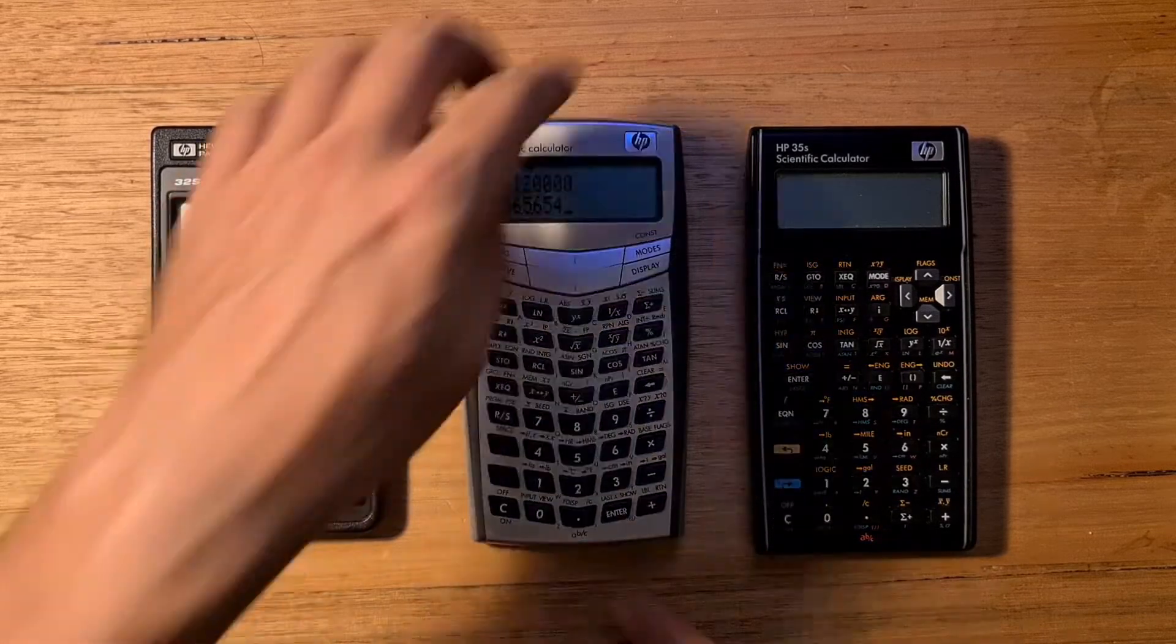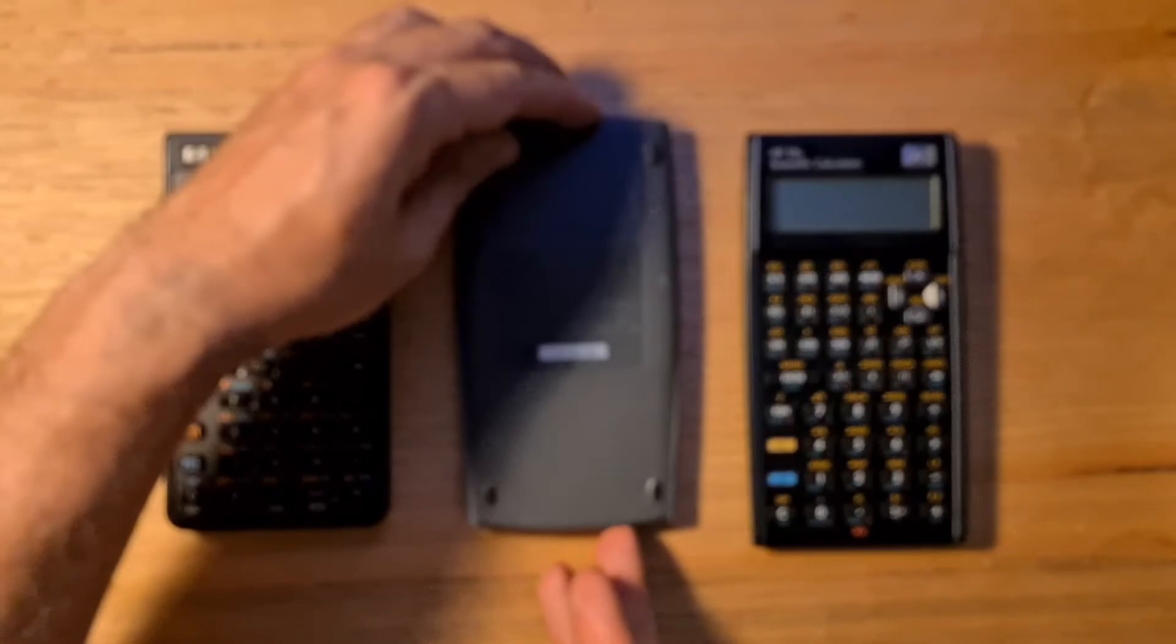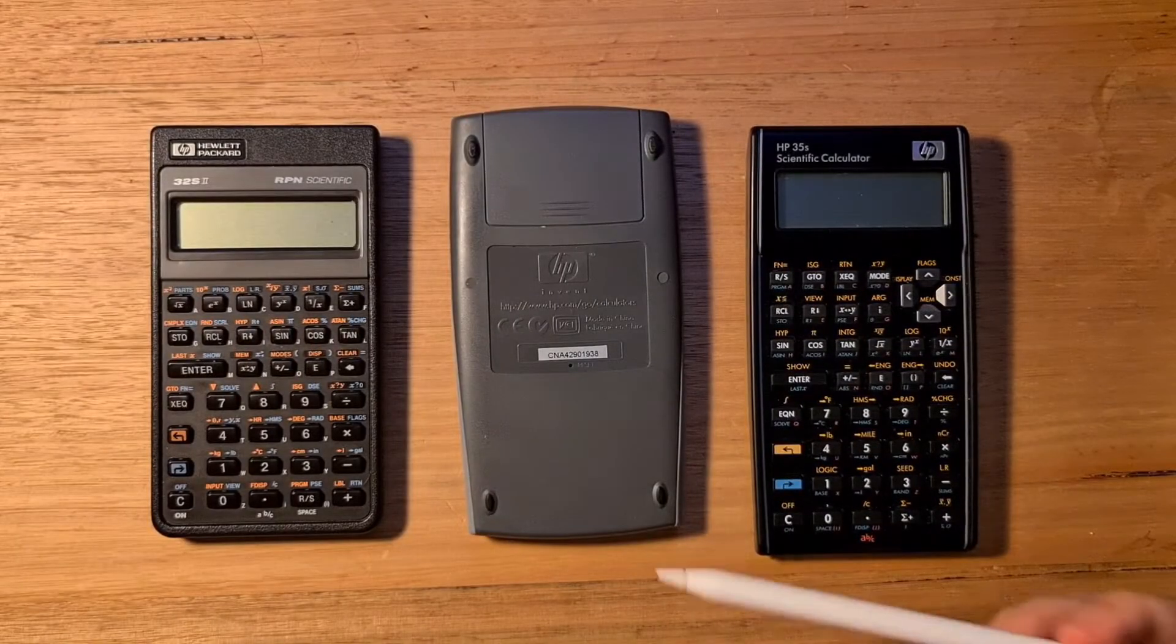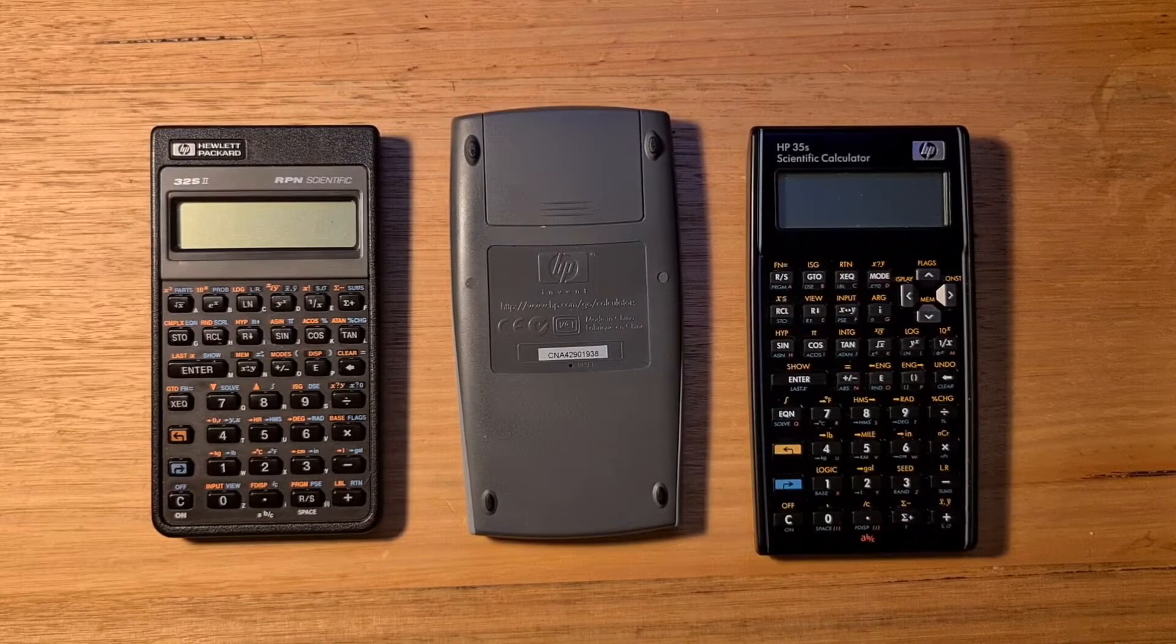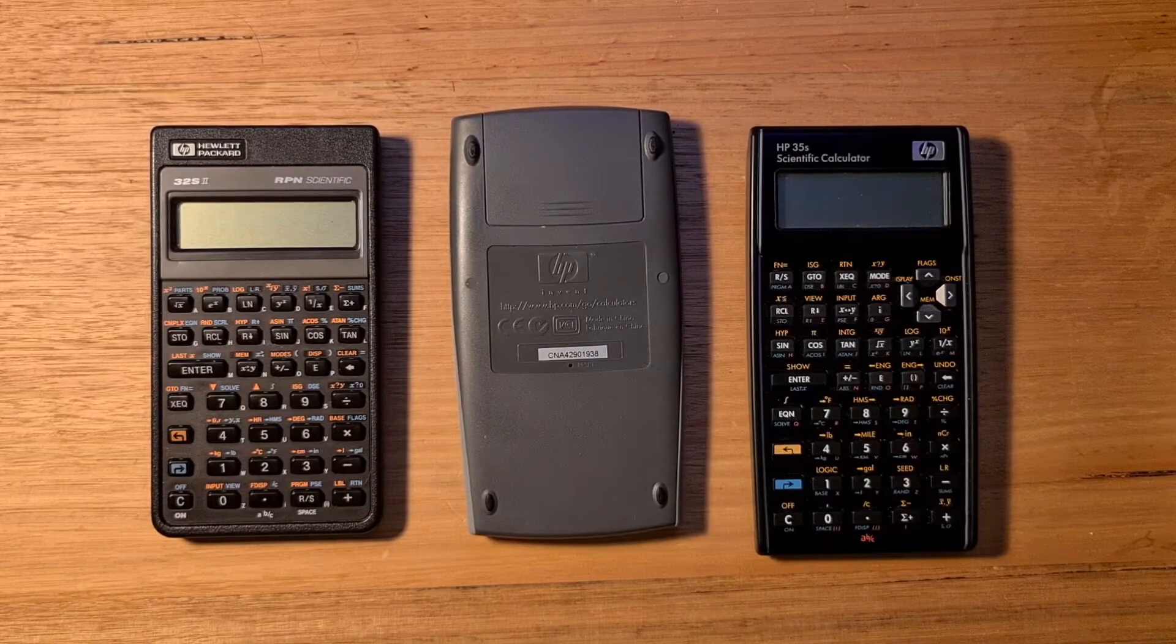On the back, we can see that the 33S had 4 small rubber feet, and the calculator tended to be prone to slipping on a desk.